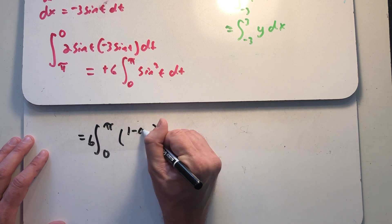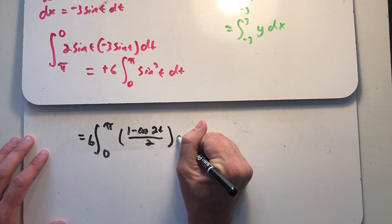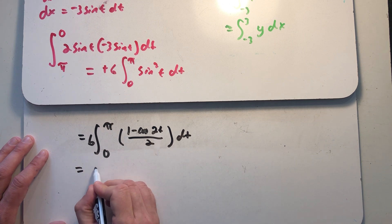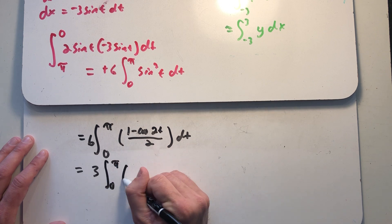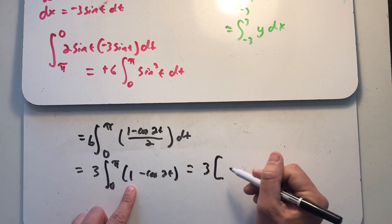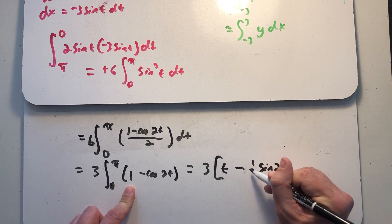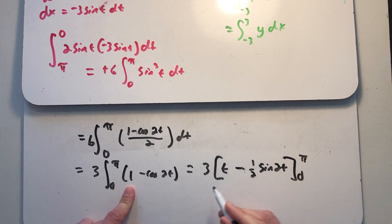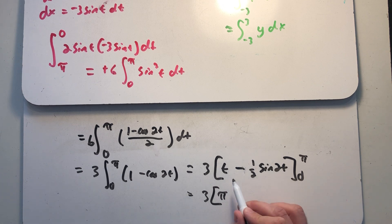Using the half-angle identity, sine squared t equals (1 minus cosine 2t) over 2. So 6 divided by 2 gives 3, and I integrate from 0 to π of (1 minus cosine 2t) dt. That evaluates to 3 times [t minus sine 2t over 2] from 0 to π, giving 3 times (π minus sin 2π over 2) minus 0, which equals 3π.